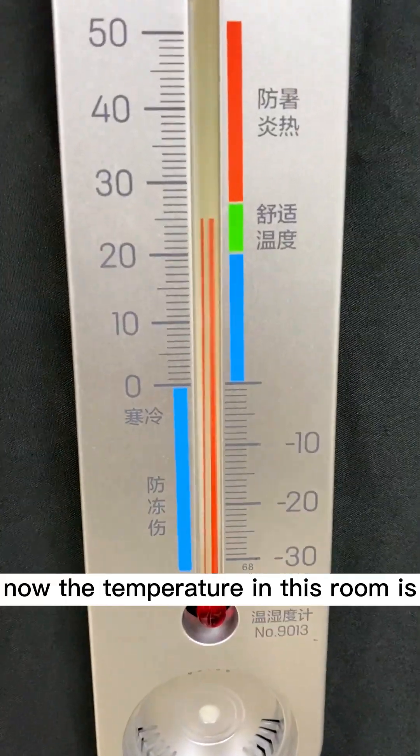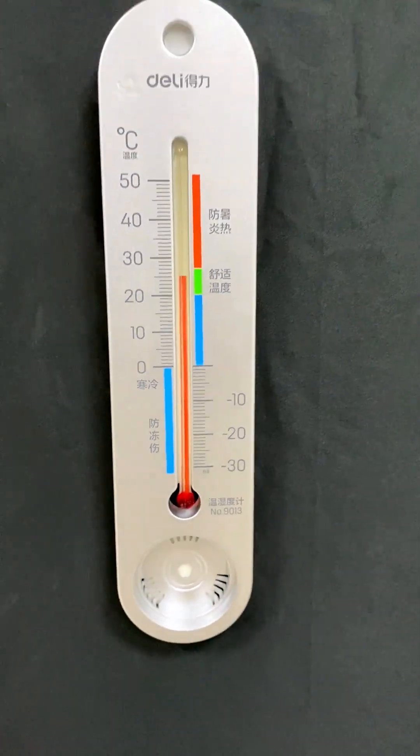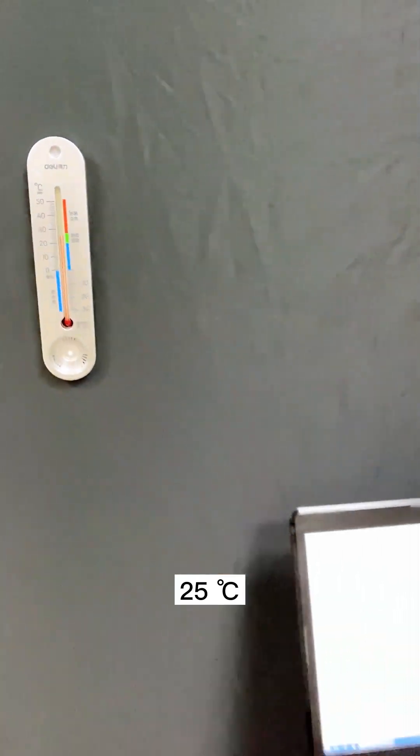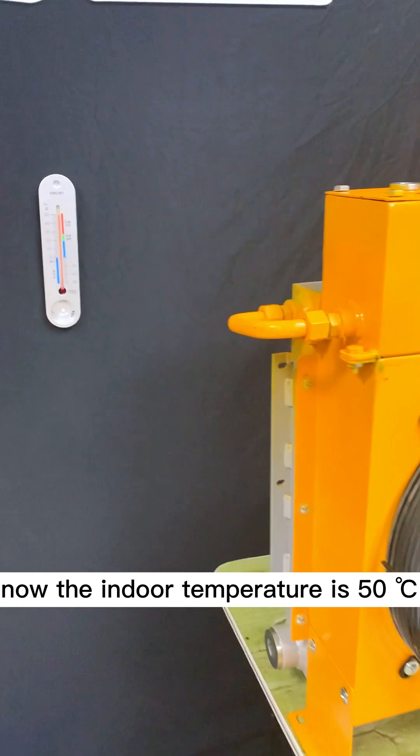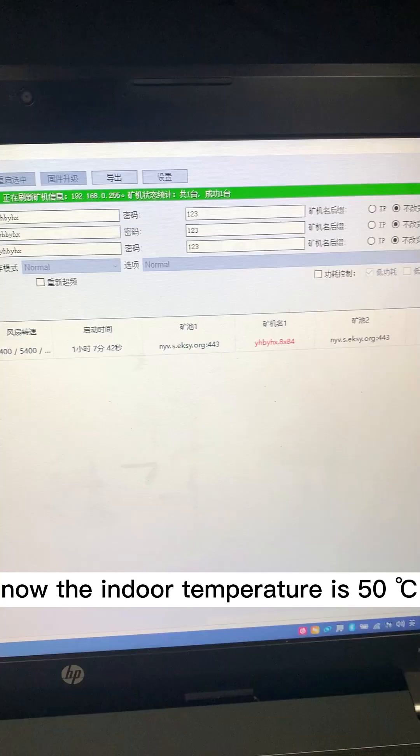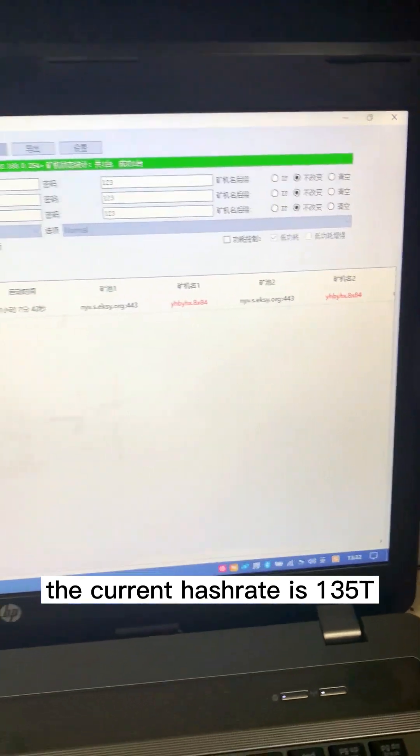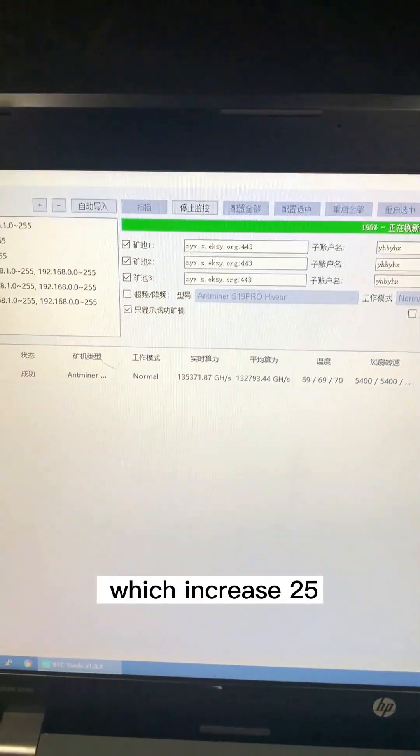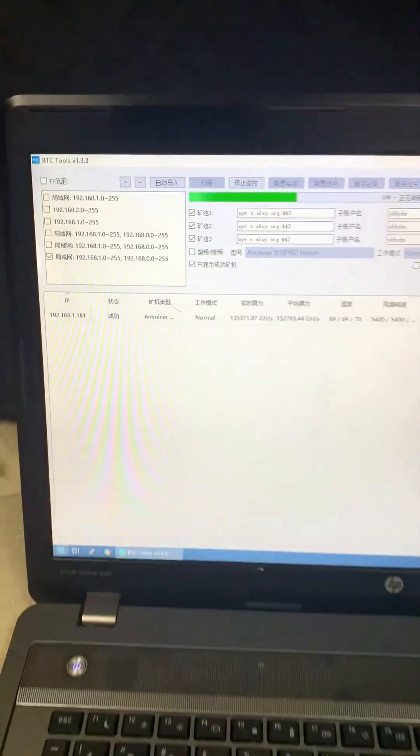Now the temperature in this room is 25 degrees Celsius. A few moments later, now the indoor temperature is 15 degrees Celsius. The current hash rate is 135, which increased 25 hash rate.